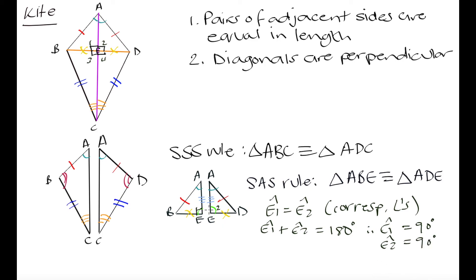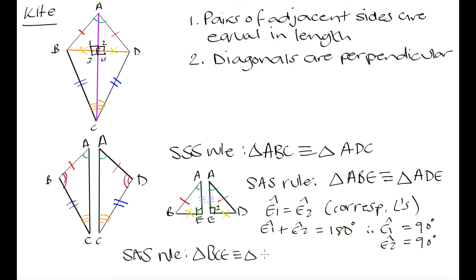We have shown that E1 and E2 are right angles. Using that same logic, we can prove that E3 and E4 are also going to be equal to one another, and since they are also on a straight line, they will equal 180 degrees. To show this, we focus on triangle BEC and triangle DEC. These two triangles also satisfy side-angle-side congruency: side BC equals side DC, side CE is a common side, and the angle at C is equal in both because of our previously congruent triangles.